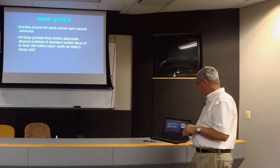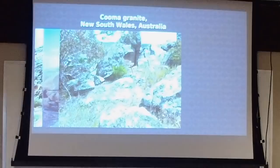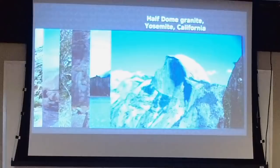Here are some examples: the Ruby granite in the Grand Canyon, the Kangaroo Bay granite in South Australia, the Cooma granite in New South Wales, the Shap granite in England, Stone Mountain Georgia, and the Half Dome granite in Yosemite National Park. All of these granites contain fully formed uranium radiohalos.